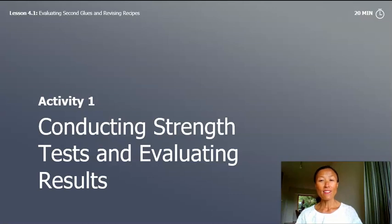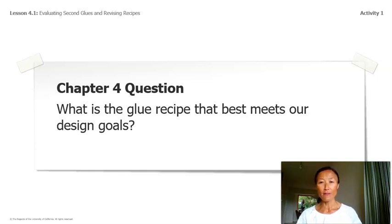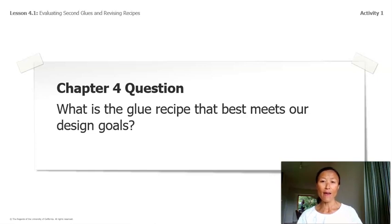Activity 1: Conducting Strength Tests and Evaluating Results. The Chapter 4 question is: what is the glue recipe that best meets our design goals? Over the next few lessons we will have the opportunity to go through the design cycle a few more times in order to try to create a recipe that meets as many design goals as possible. Remember, this is what engineers do — after they make something, they conduct simple tests to gather evidence to help them meet all the design goals.